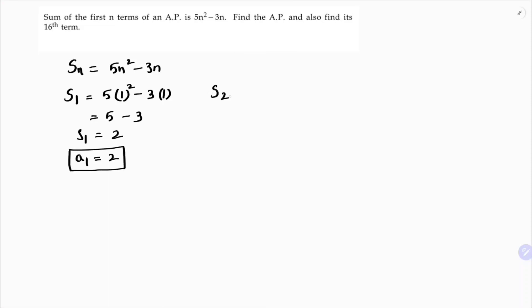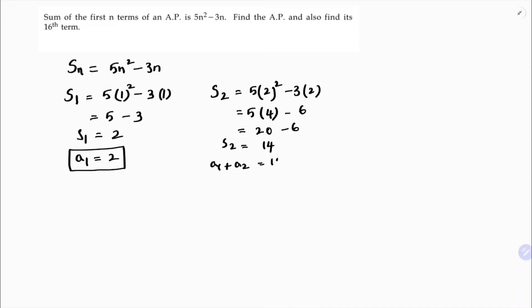Now I'll find S2, the sum of two terms. So 5 into 2 squared minus 3 into 2, which is 5 into 4 minus 6, giving 20 minus 6 which is 14. So S2 is 14. S2 is a1 plus a2 equals 14. Since a1 is 2, we get a2 equals 14 minus 2, so a2 is 12.